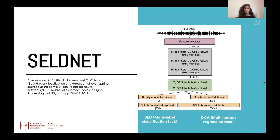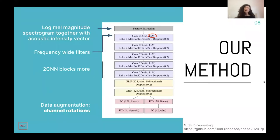The DOA is treated as a multi-output regression task. At the end, the network is divided into two separate branches. The first one considers the SED task and uses two fully connected layers with Sigmoid at the last layer. The second branch considers the DOA task, formed by two fully connected layers with Tanh as the activation function at the last layer. Our method is an improvement of this SELDnet baseline system where we consider as input the log-mel magnitude spectrogram together with the acoustic intensity vector.